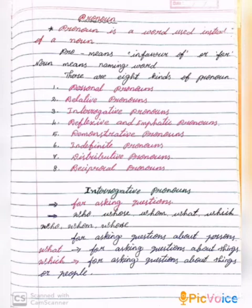There are 8 kinds of pronouns: Personal pronouns, Relative pronouns, Interrogative pronouns, Reflexive and Emphatic pronouns, Demonstrative pronouns, Distributive pronouns, Indefinite pronouns, and Reciprocal pronouns. But today we are going to see 2 types only — Relative and Interrogative pronouns.